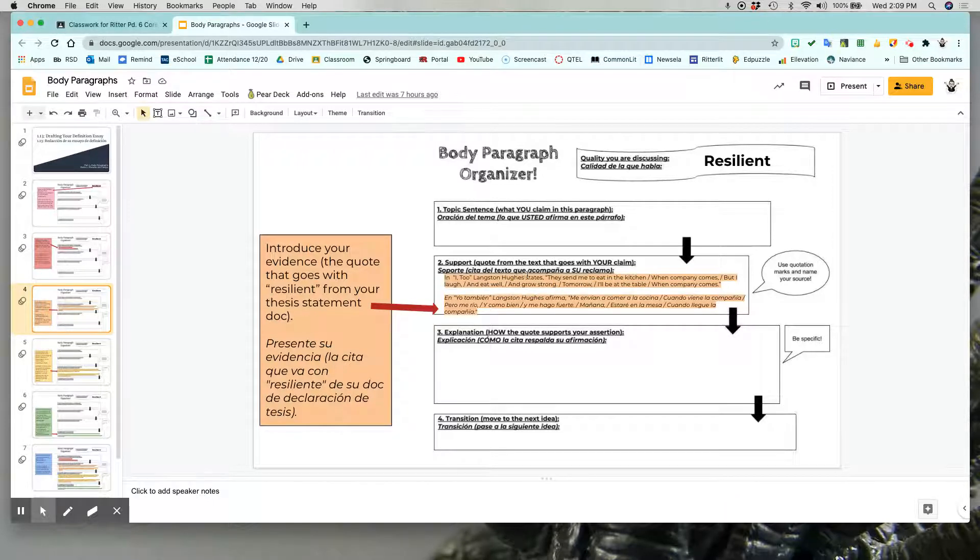And then I added this little tag at the beginning to introduce who said it and in what text they said it. So it says in I2 Langston Hughes states and then I put my quote. So make sure you're paying attention to this little speech bubble over here. You need to put the quote in quotation marks and you need to tell me who said it and what text they said it. All of that information should be both on your graphic organizer from brainstorming and your thesis statement document.